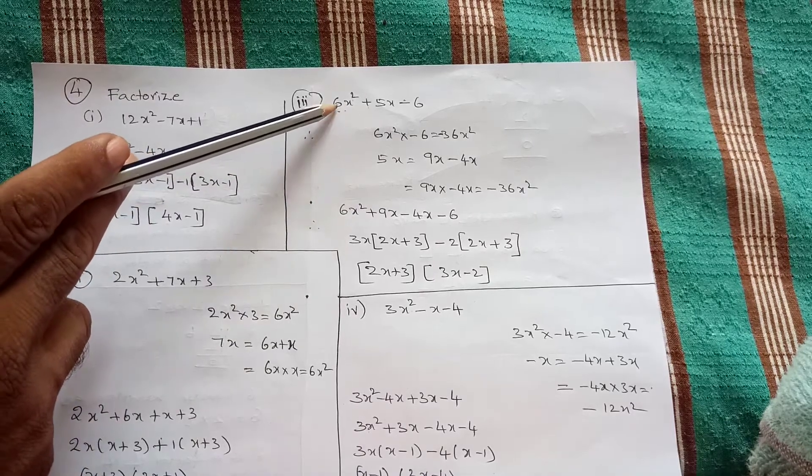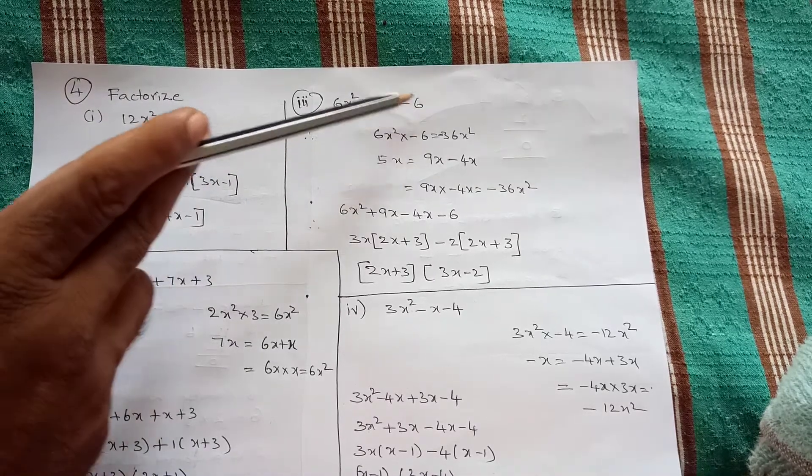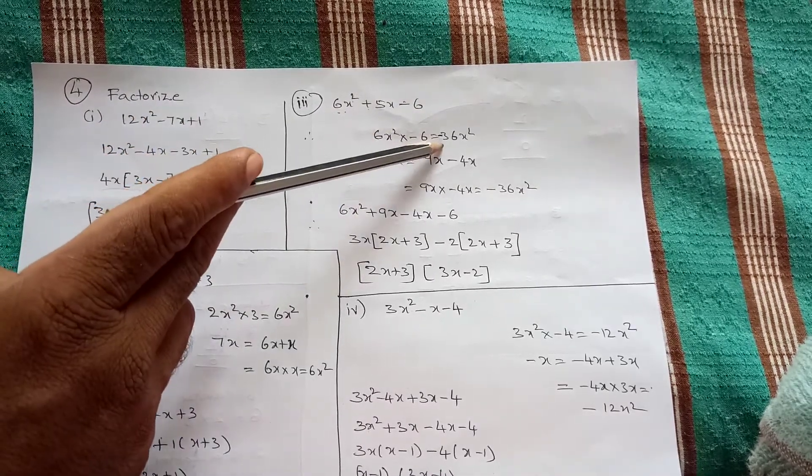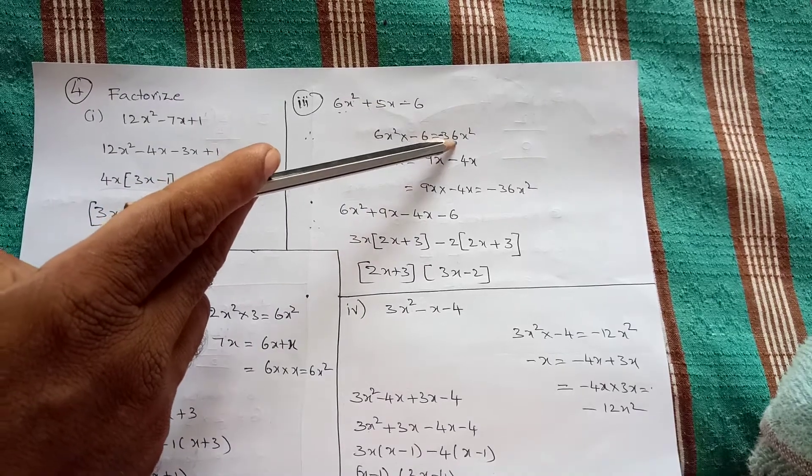Now, take first term and last term. Multiply, it is minus 36x square.